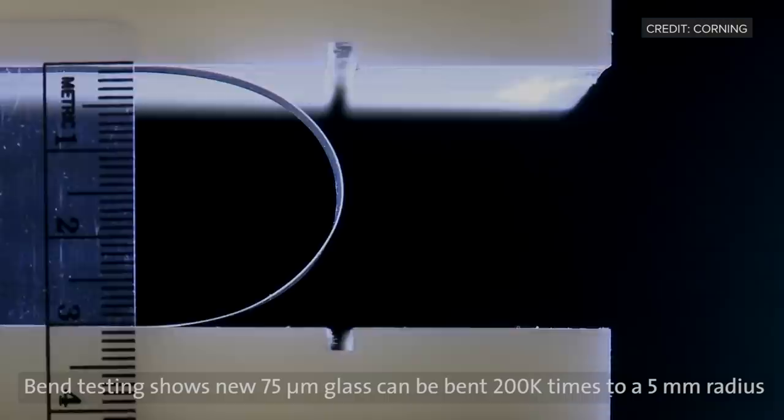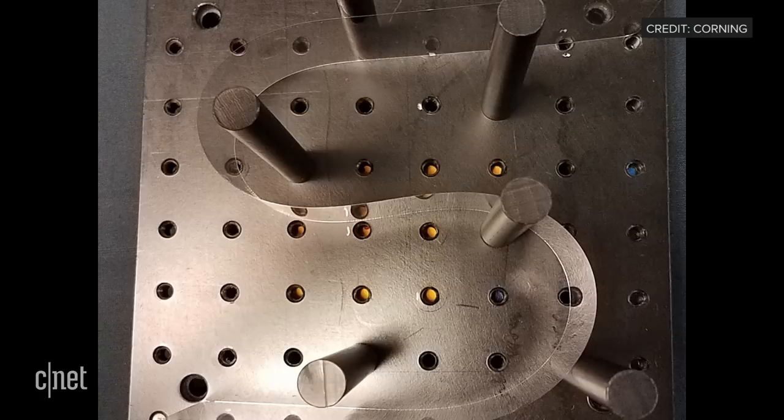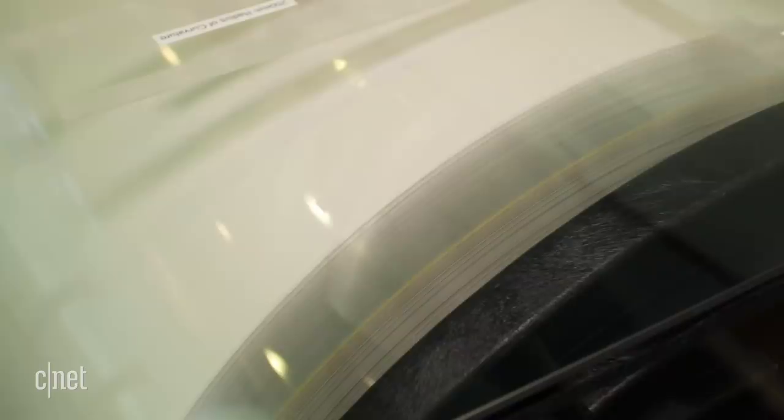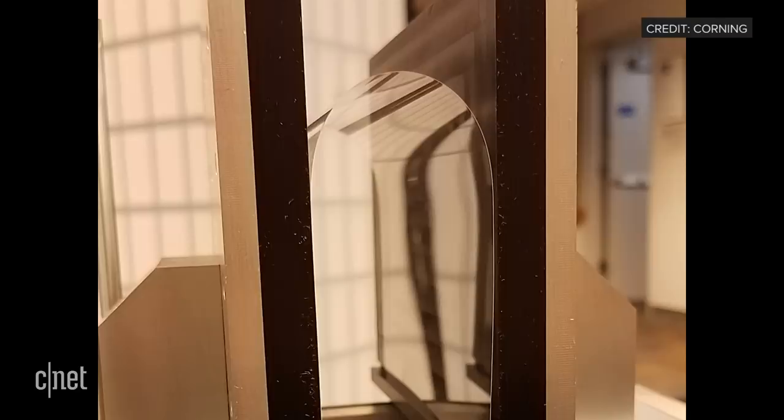We got an early look at Corning's ultra-thin bendable glass, and though we weren't allowed to film it, this is Corning's footage of what it actually looks like. It's not their first bendable glass, but it's a lot thinner and a lot more flexible than the willow glass they introduced a few years back. It bends to a 5mm radius, and the texture feels more like thin plastic than a sheet of glass.